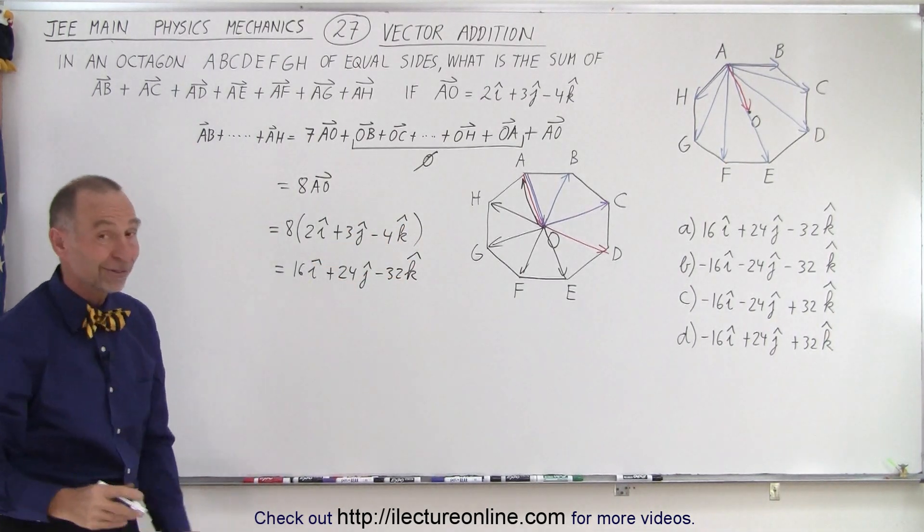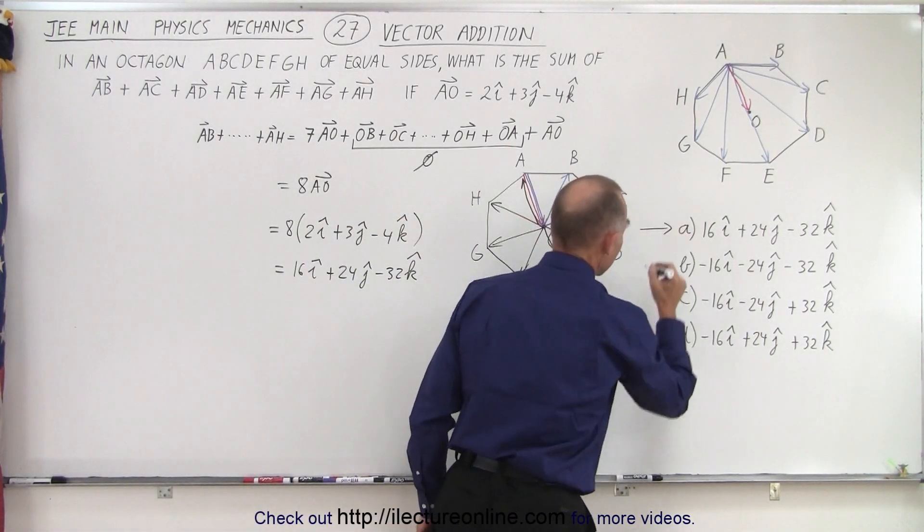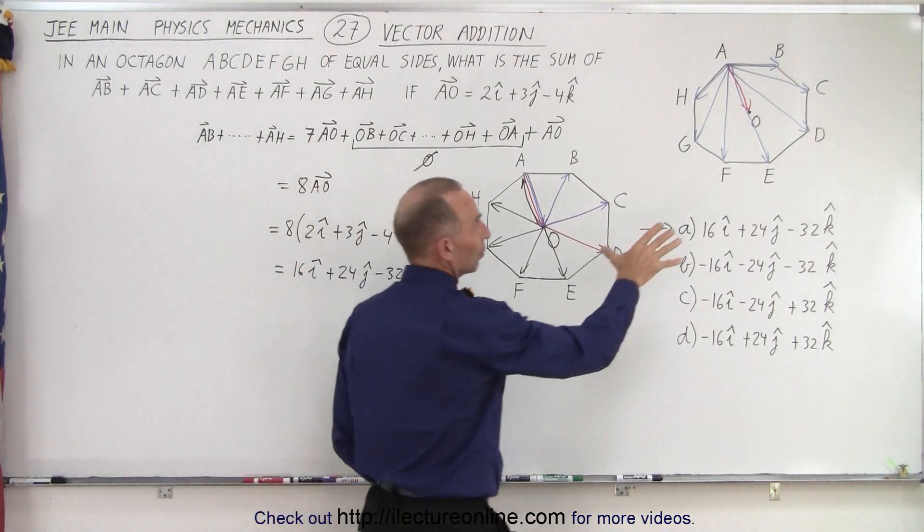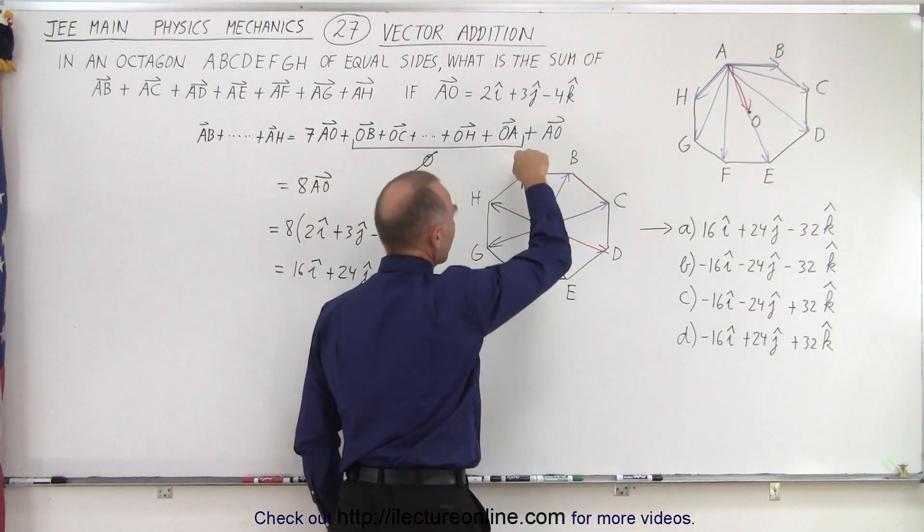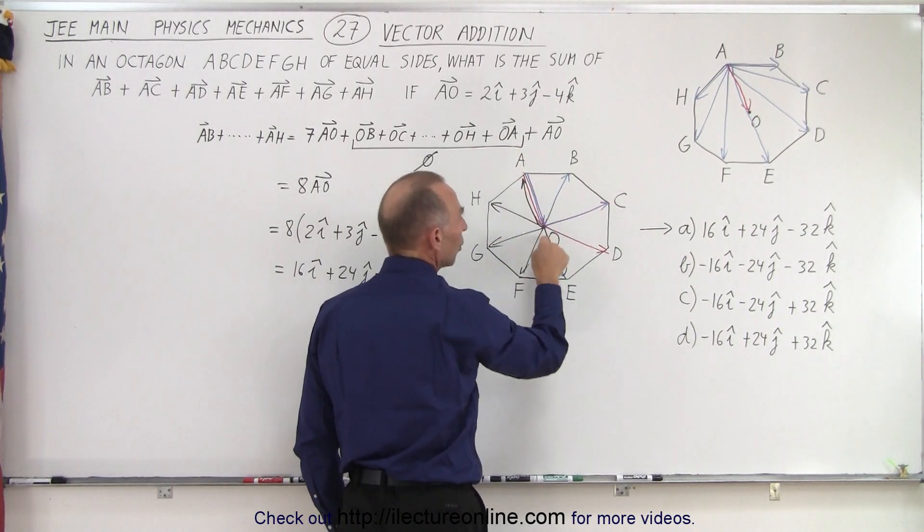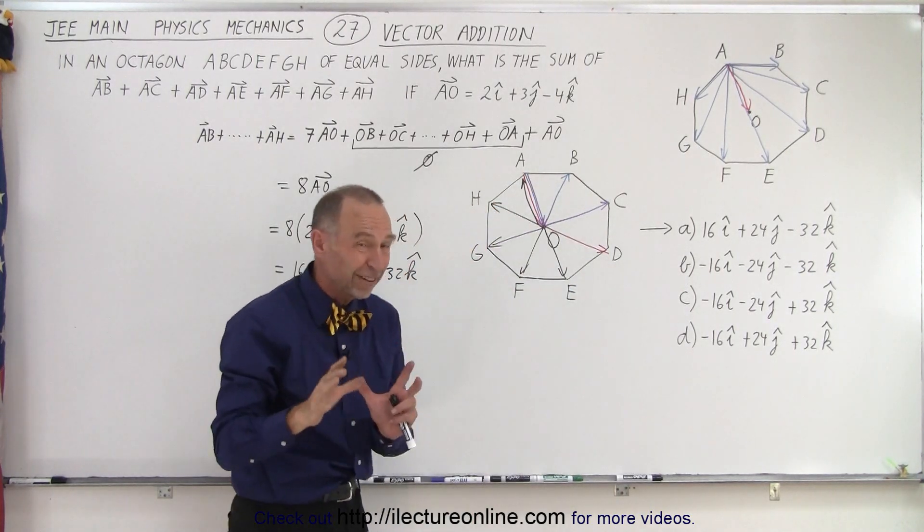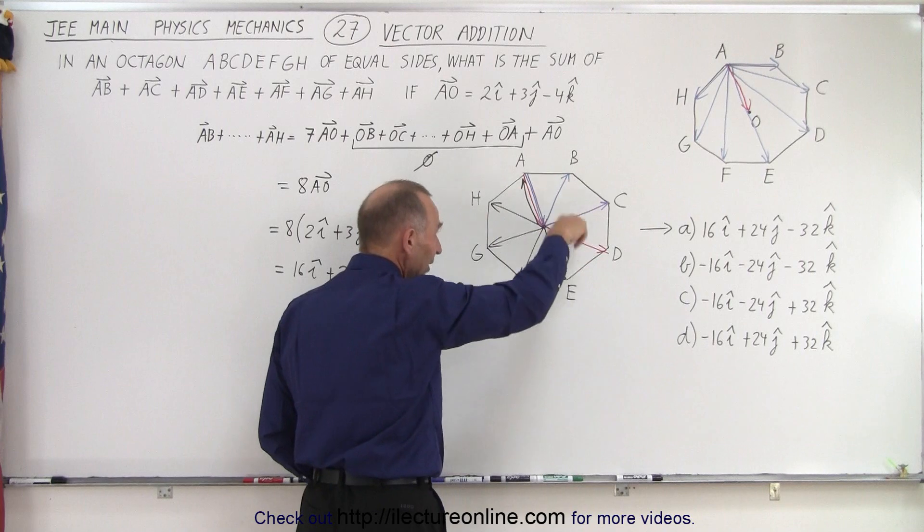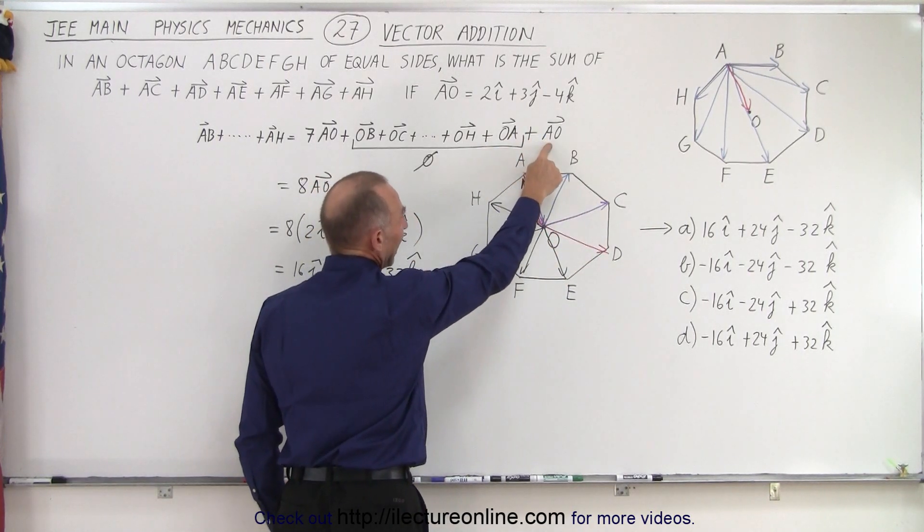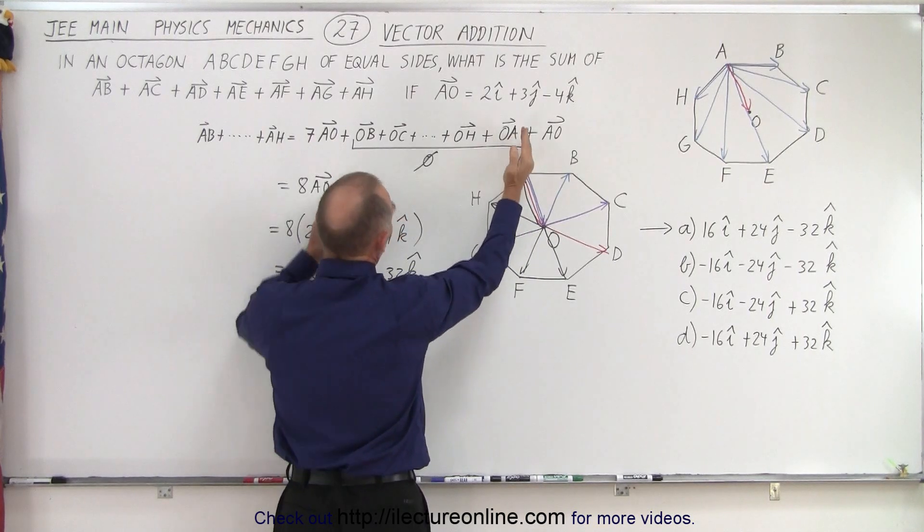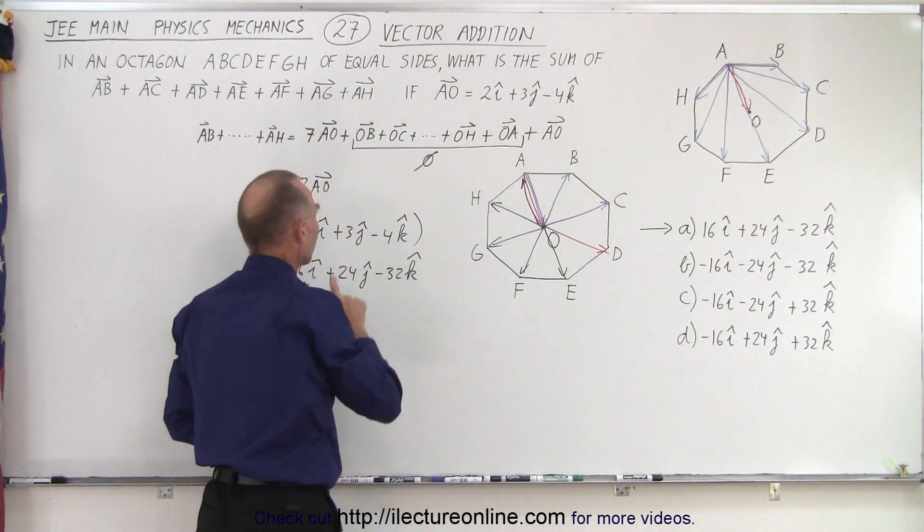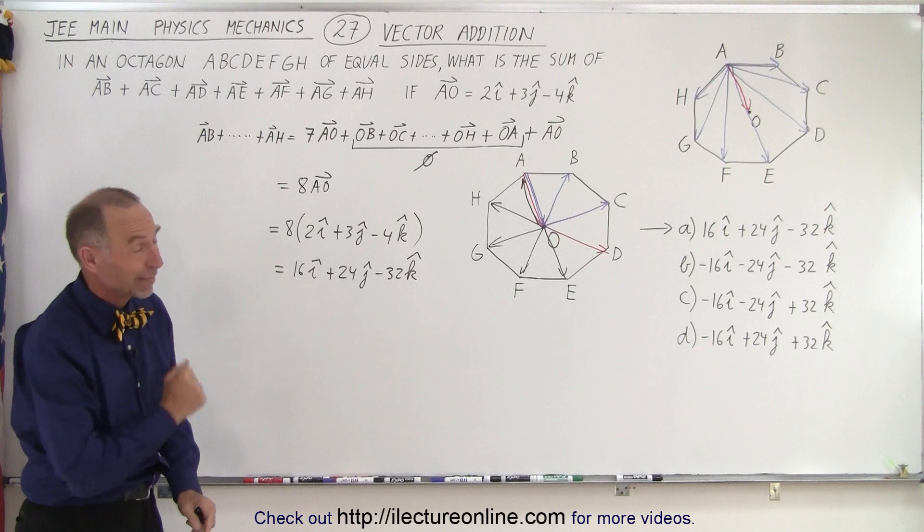And then if you look at your possible answers, it looks like answer A is the correct one. So it's all about realizing that there's no way that I was going to solve this, but each of those vectors can be represented by a vector from A to O and then from O to B, A to O, O to C, A to O, O to D, and so forth, all the way around. Notice we only have seven of those. If I then add an eighth one and add all those eight together, I get zero. So I need to add an OA, but then I also have to add an AO to negate adding this one. So I have eight of those that add up to zero, and then seven plus one give me eight AOs that adds up to this. And that is how it's done.